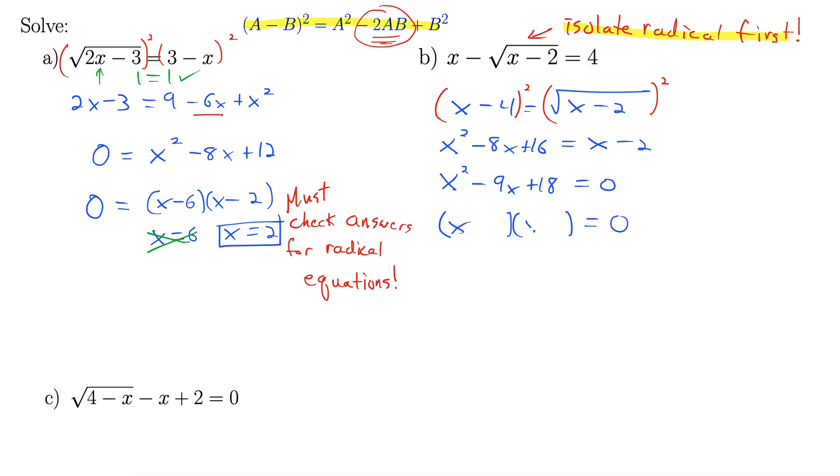We have x and x. We need factors of 18 that add to negative 9. How about minus 6 and minus 3? Next, we set each one of these factors equal to 0 and solve. This gives us x equals 6 and 3.